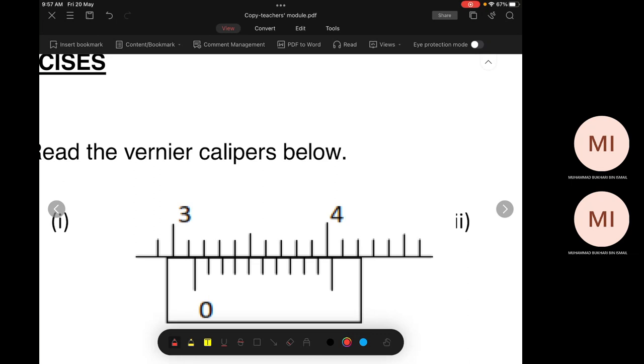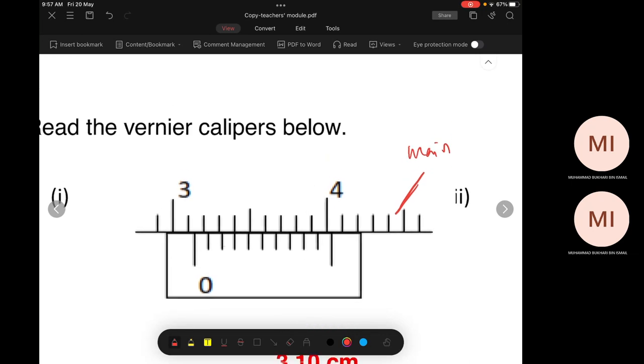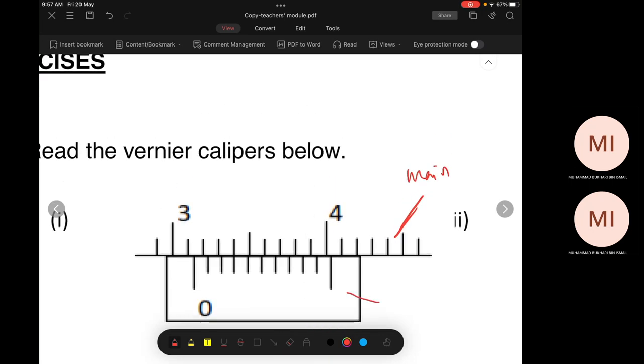We have main scale and we have vernier scale. Which one is main scale? This one is main scale, right. This one is vernier scale.